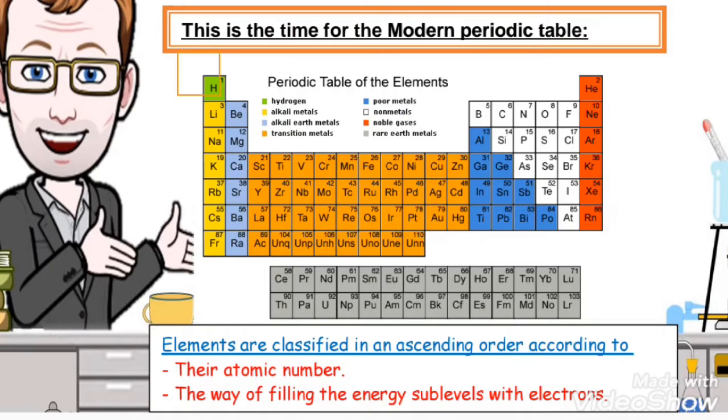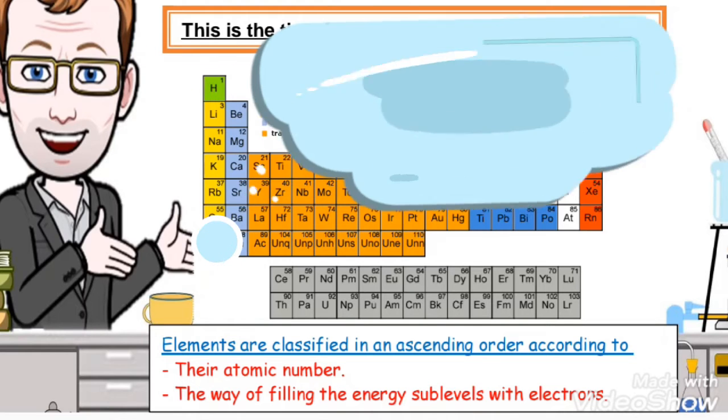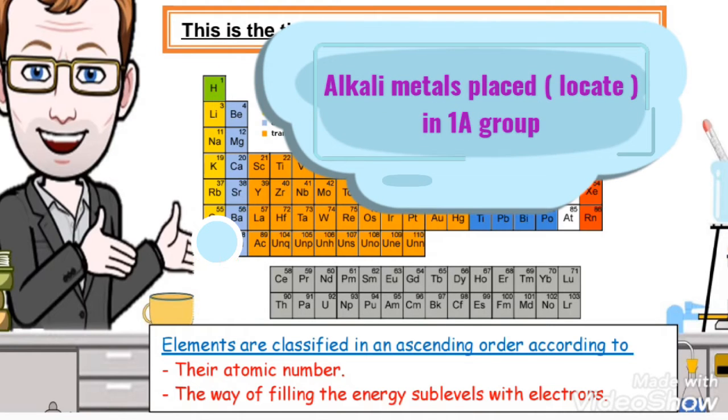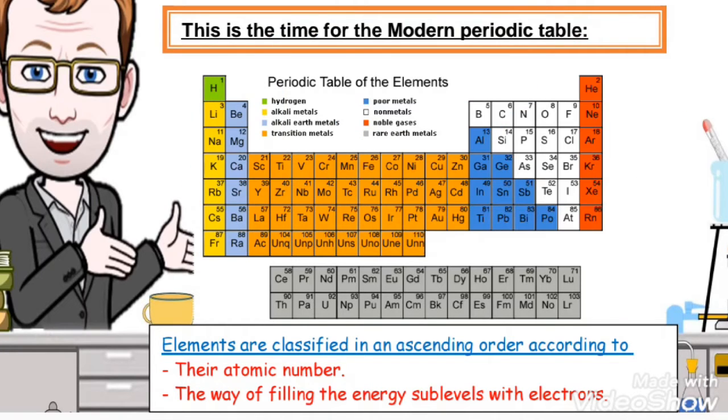In this case we will ignore hydrogen because it's really a non-metal in its properties. So alkali metals are located in group 1A, and all the elements inside 1A share the following properties.